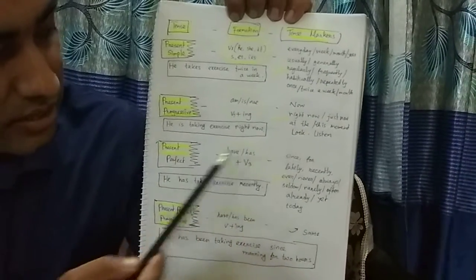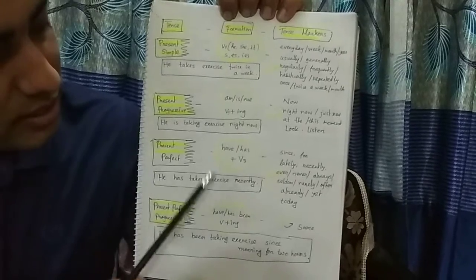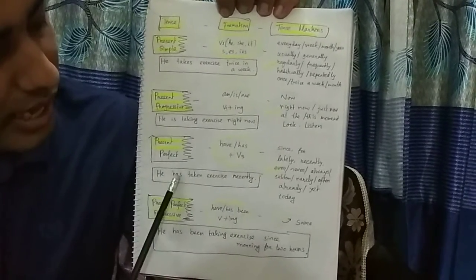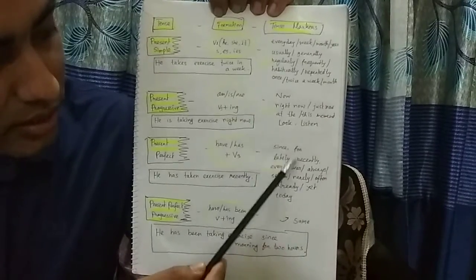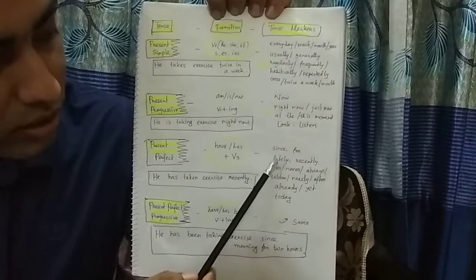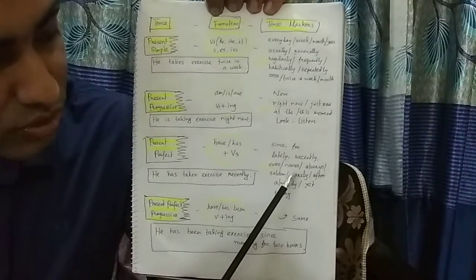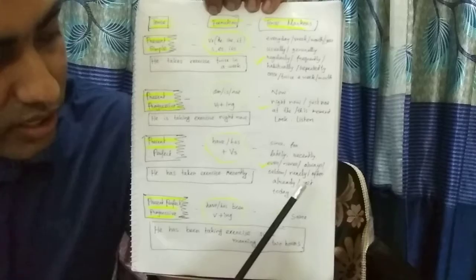Now present perfect tense: have or has plus verb three. Look at the example: he has taken exercise recently. The markers are: since, for, lately, recently, ever, never, always, seldom, rarely, often, already, yet, and today. These markers will mark present perfect.